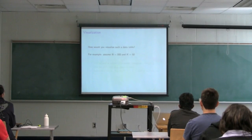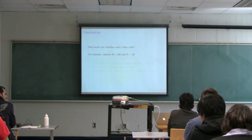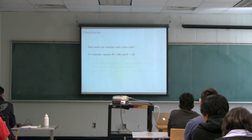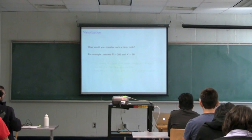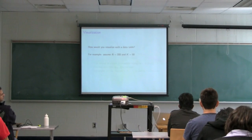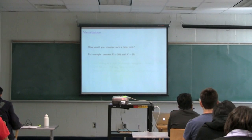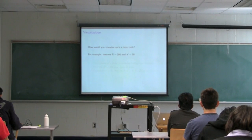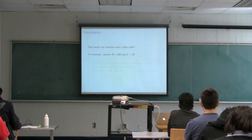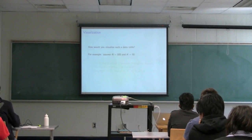Say you've got a data table with 300 rows and 50 columns — a pretty small data table. Before doing any analysis, one of the first things we'd like to do is plot the data. As homework last week, I asked you to look at the visualization slides. Visualization is important for this course and any statistics course. Based on those notes or your own experience, how would you start to look at a data table with 300 rows and 50 columns?